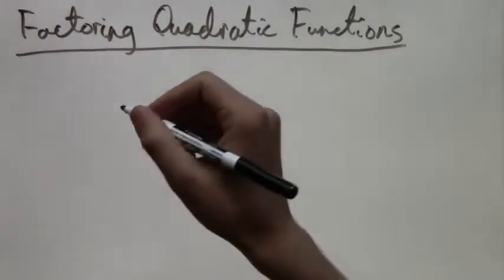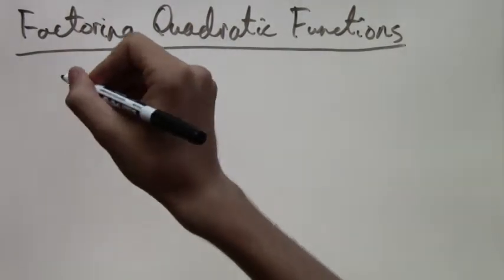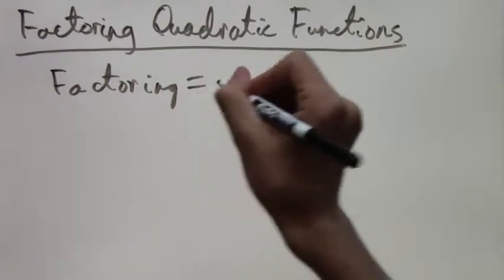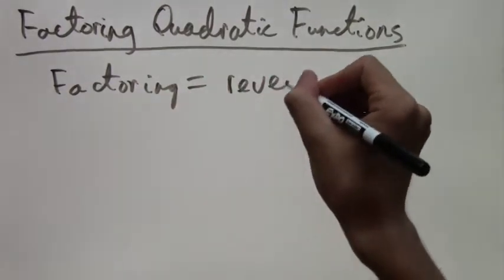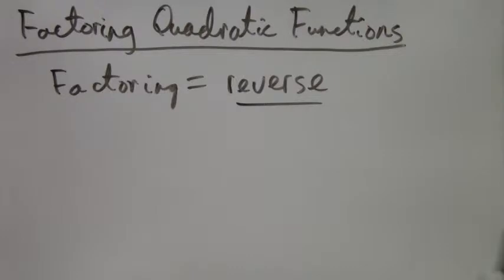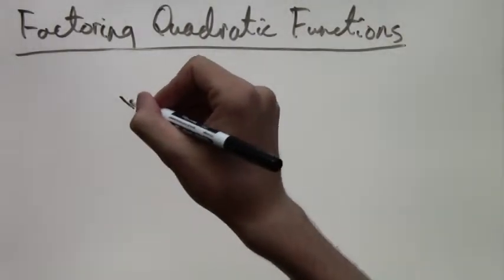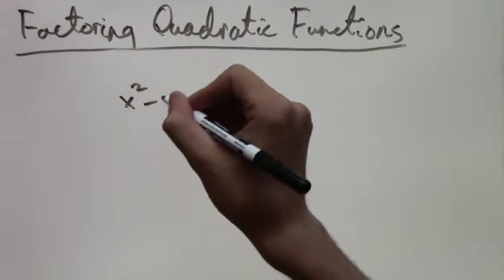Now factoring is actually just the reverse of foiling. You start out with a quadratic function in standard form and you factor it into one thing multiplied times another that you can then foil back.